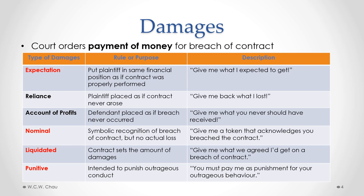When a court orders damages, it is ordering the breaching party to pay some amount of money to the innocent party to compensate for that breach of contract. How those damages are determined will vary depending on the specific type of damages being awarded. This chart summarizes a number of different kinds of damages. The types we will examine, highlighted in red, are expectation damages, nominal damages, liquidated damages, and punitive damages.